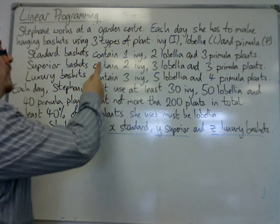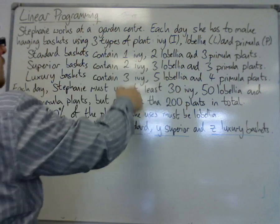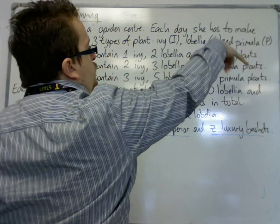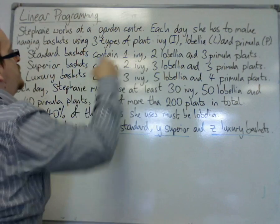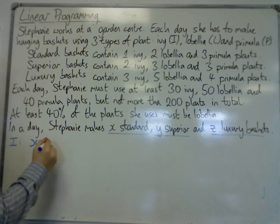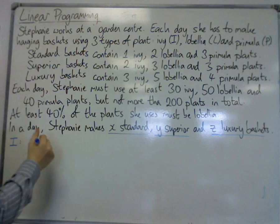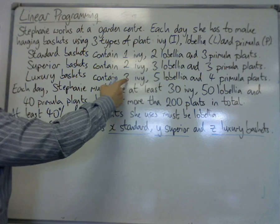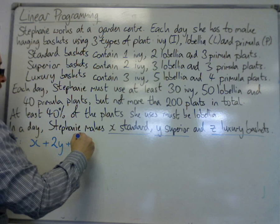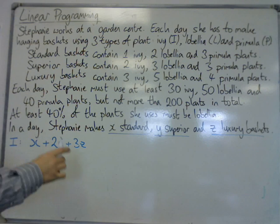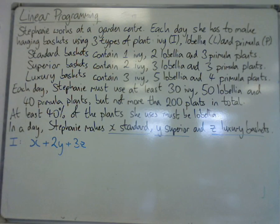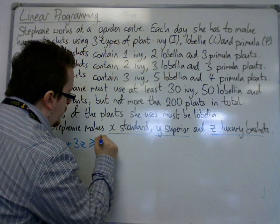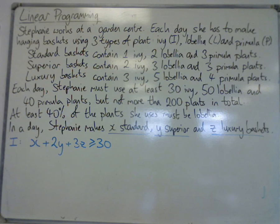We can see that this is set out in columns — we have Ivy, Lobelia, and Primula. We're going to have an inequality for Ivy. We've got one Ivy in each standard basket, so one lot of x; two Ivies in a superior basket, so two lots of y; and three lots of Ivy in a luxury basket, so that's three lots of z. We're told that each day Stephanie must use at least 30 Ivy plants, so this must be greater than or equal to 30. That's my first inequality.